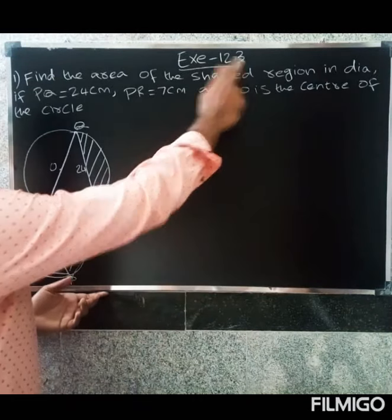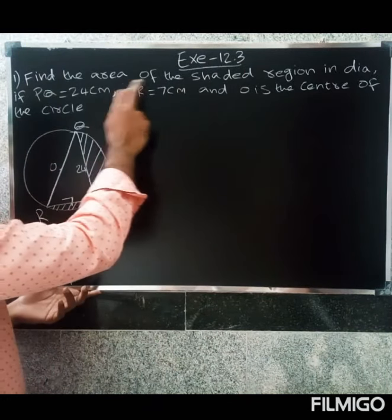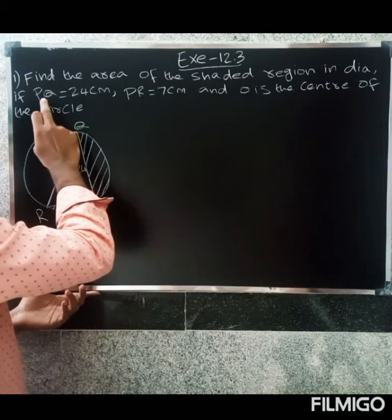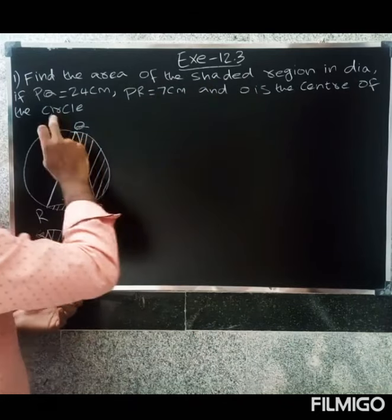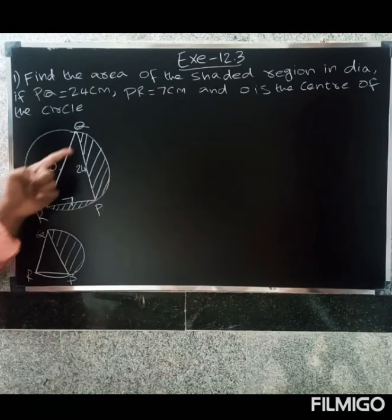Welcome friends, Exercise 12.3. First question: Find the area of the shaded region in a diagram if PQ equals 24 cm, PR equals 7 cm, and O is the center of the circle.